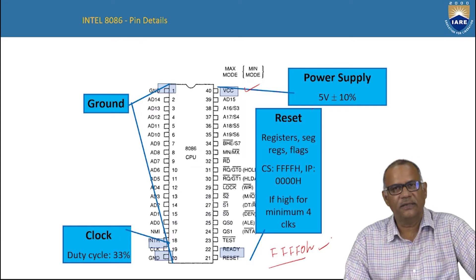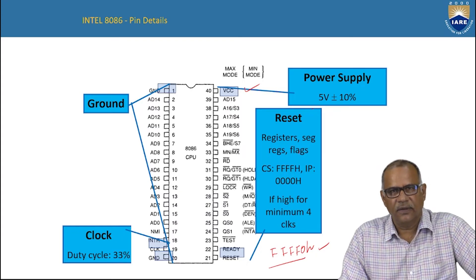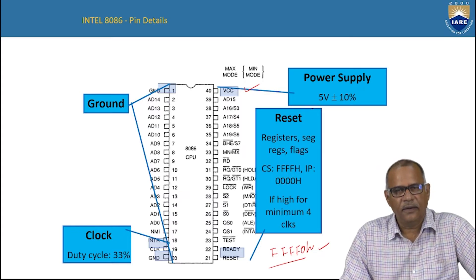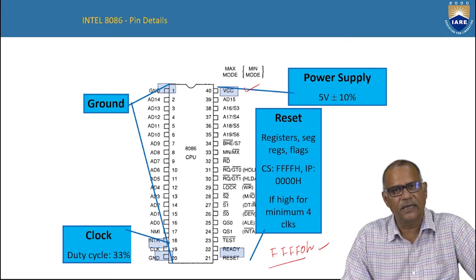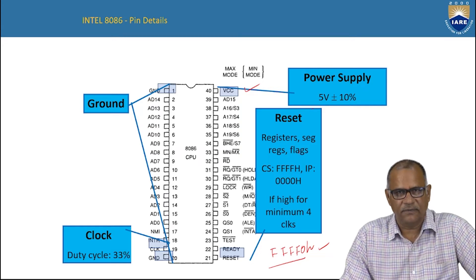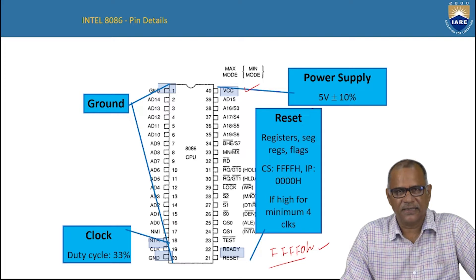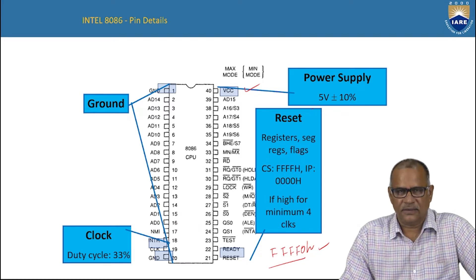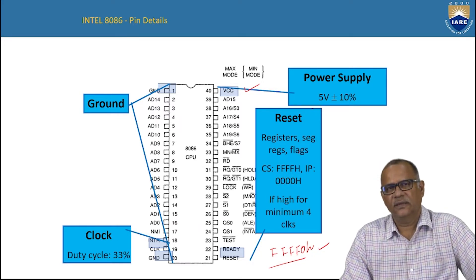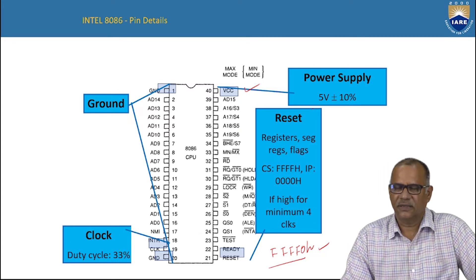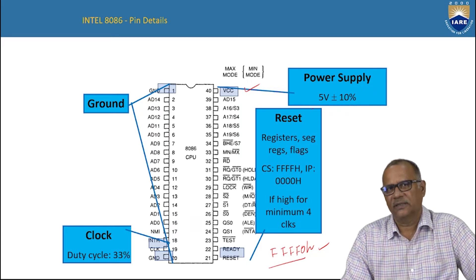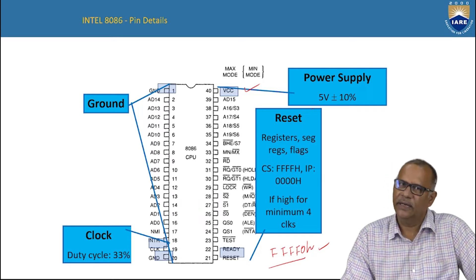The physical address in 8086 is computed by taking the base address from the segment registers. There are 4 segment registers: the code segment, data segment, stack segment, and extra segment. The base address is taken from the segment register and the offset address is taken from pointer registers like SP, BP, BX, SI, or DI.